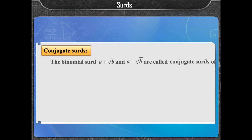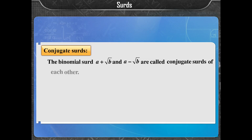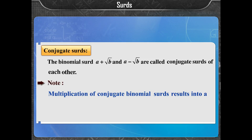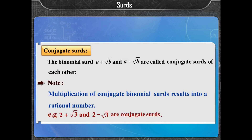The binomial SIRDS (A + √B) and (A − √B) are called conjugate SIRDS of each other. Note that the multiplication of conjugate binomial SIRDS results in a rational number. For example, (2 + √3) and (2 − √3) are conjugate SIRDS.